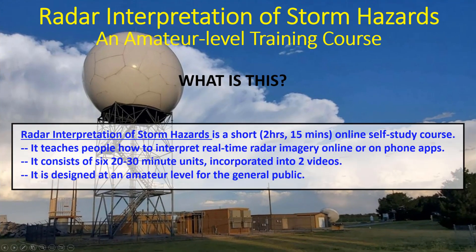Radar Interpretation of Storm Hazards is a short, online, self-study course, a little over two hours in length, that people can complete on their own schedules. It teaches people how to interpret real-time radar imagery available online or on smartphone apps. It consists of six units, each 20 to 30 minutes long, incorporated into two separate videos that students complete at their own pace.